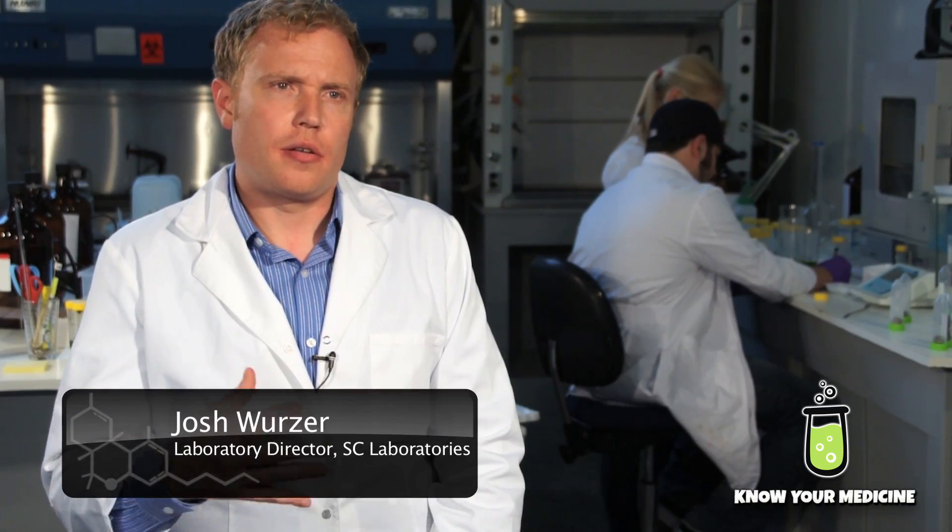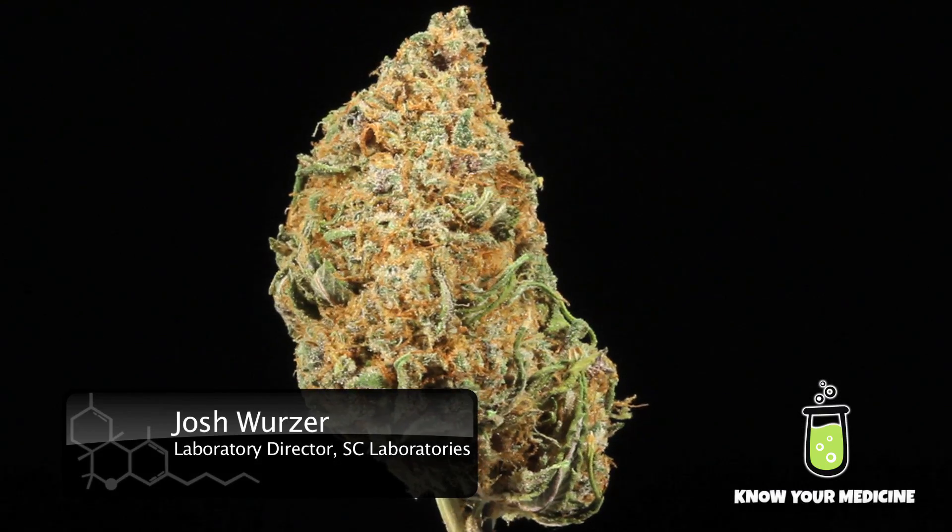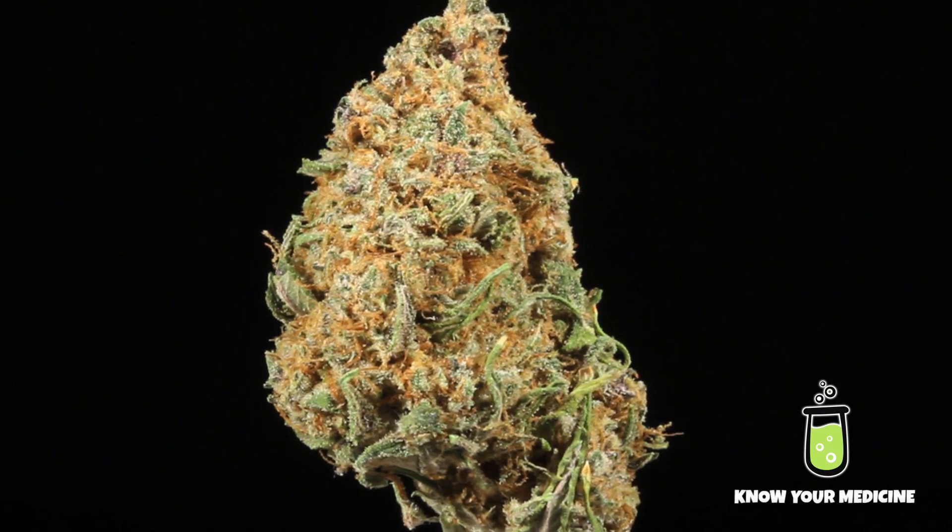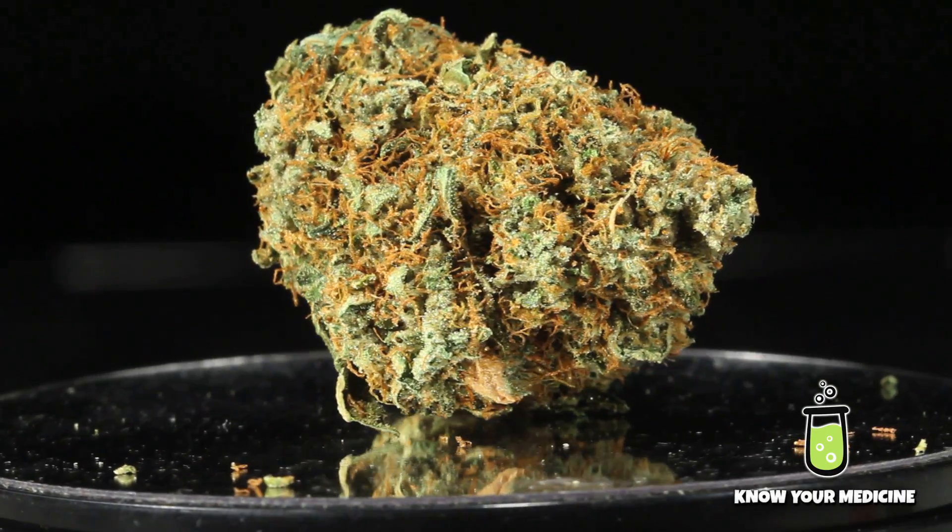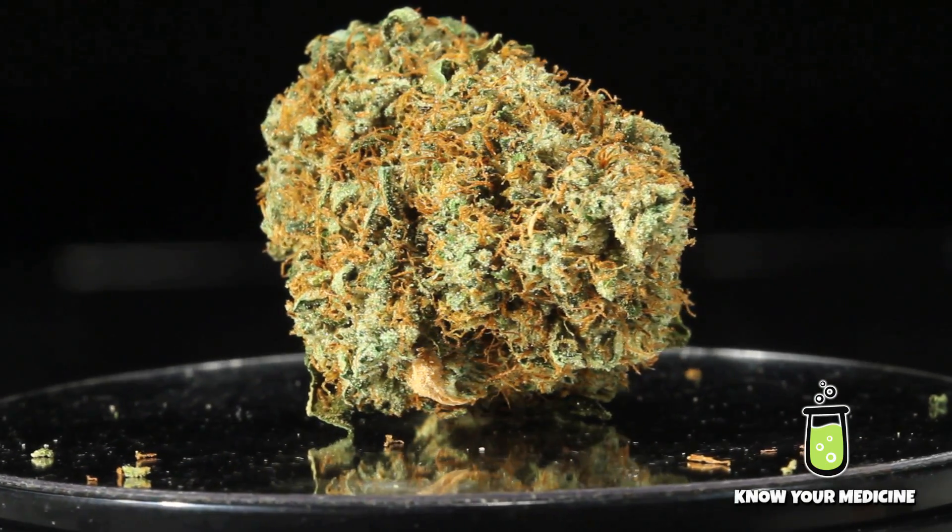The cannabis plant produces several terpenoids that give it - you have cannabis plants that smell like bubble gum, grape, lemon, spices. So cannabis is really an interesting plant in the fact that it can produce a wide range of terpenoids.